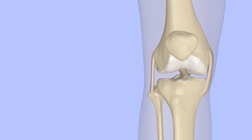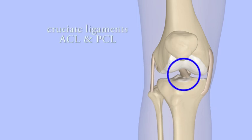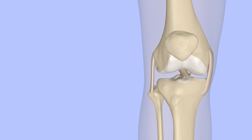The cruciate ligaments are found within the knee joint. They help to keep the tibia from gliding too far backwards or forwards in relation to the femur. They are known as the cruciate ligaments because they cross each other.